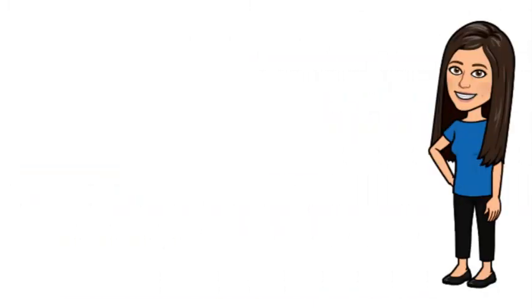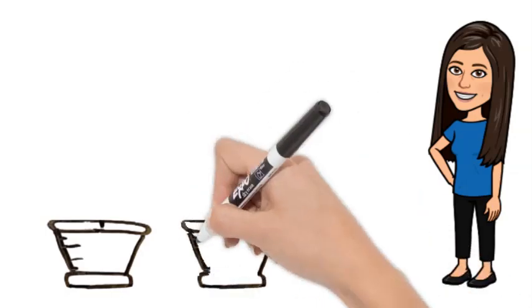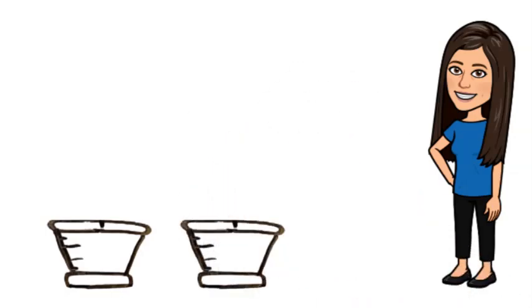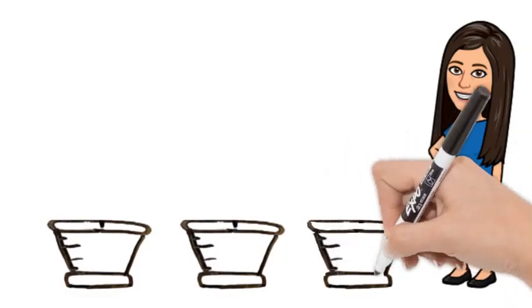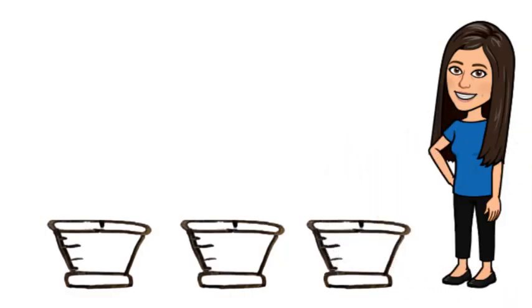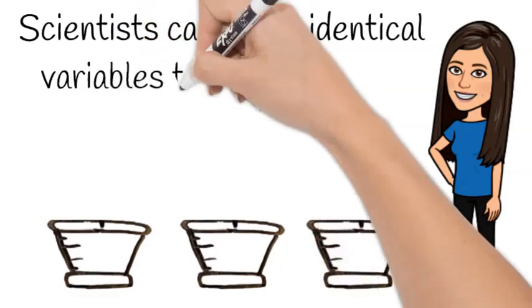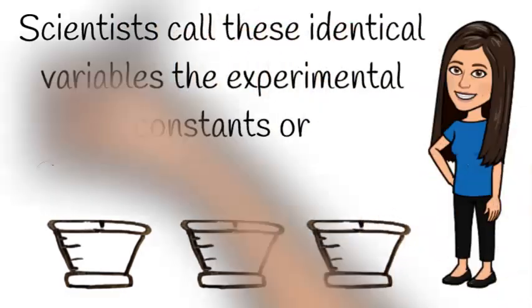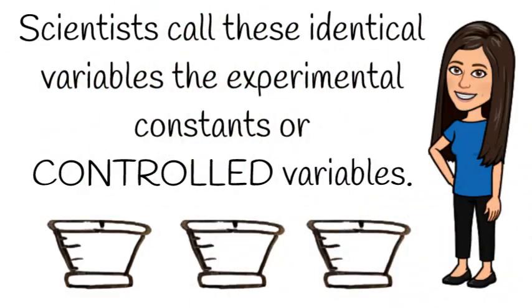To start my experiment, I'm going to gather identical supplies. I will need to make sure I have the identical sized pots with the same amount and type of soil in them. I will also need to place the same number of peas, which are the seeds, in each pot at the same depth and distance apart. Scientists call these identical variables the experimental constants or controlled variables.